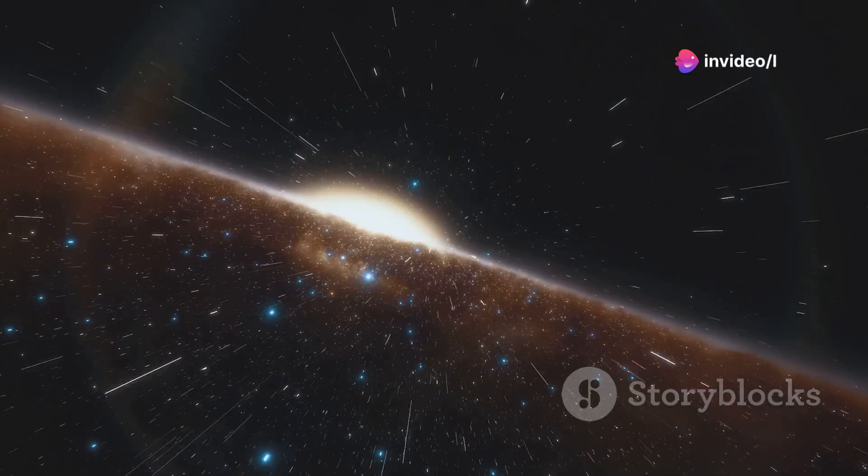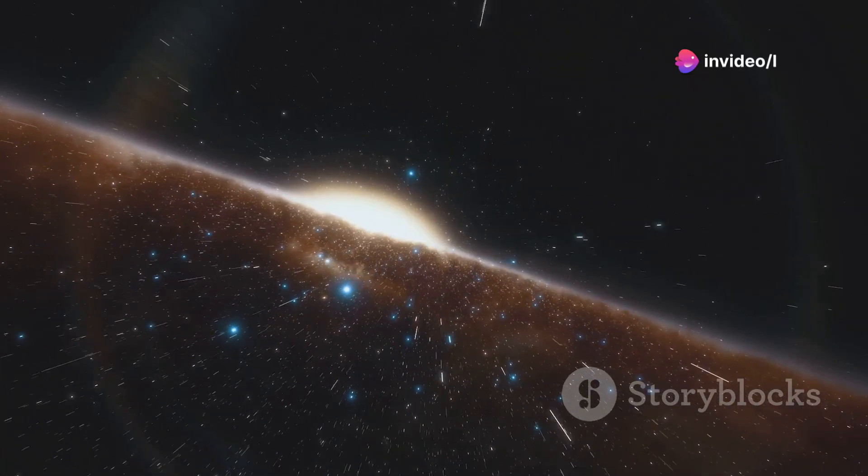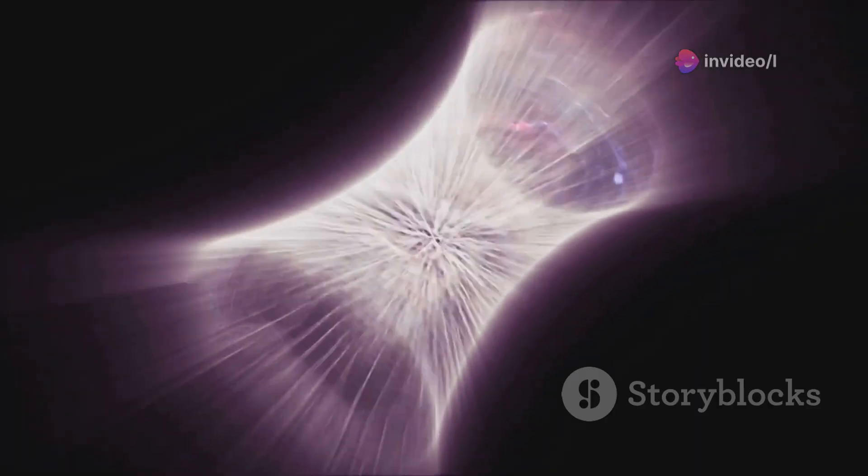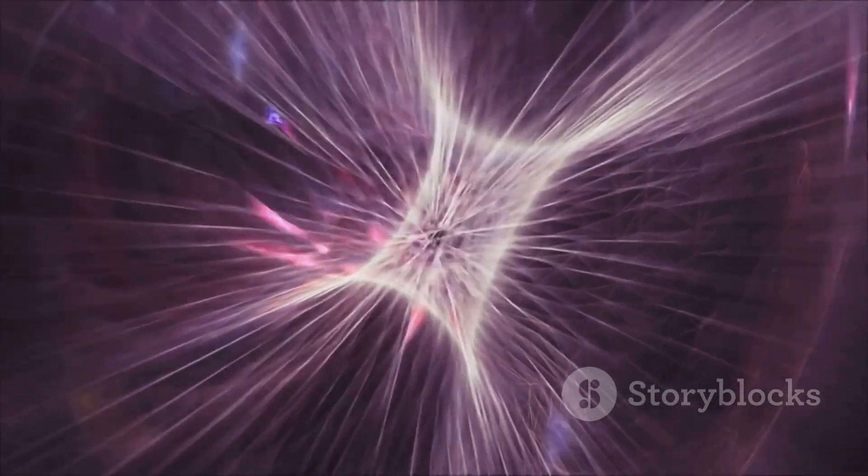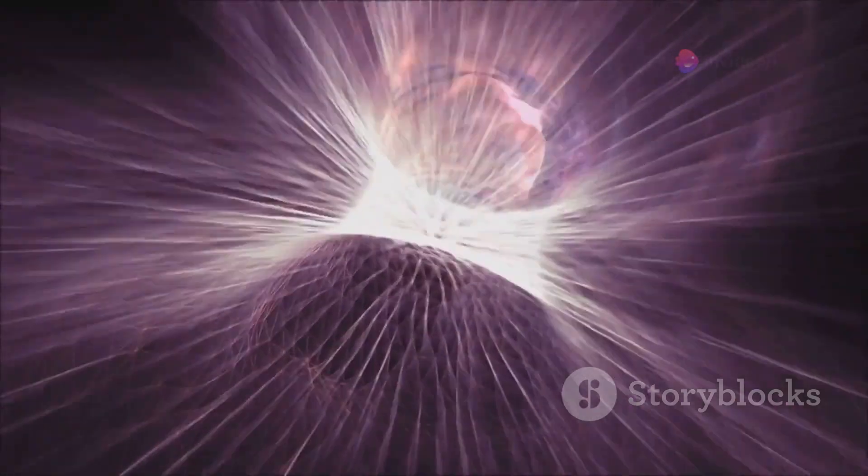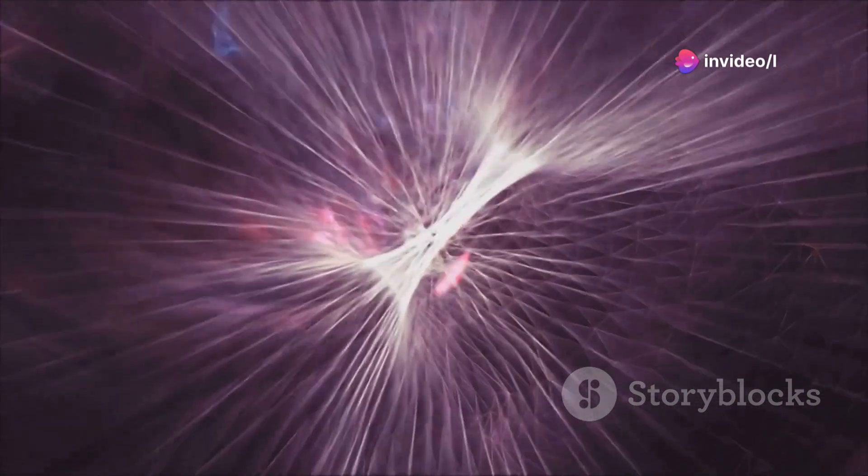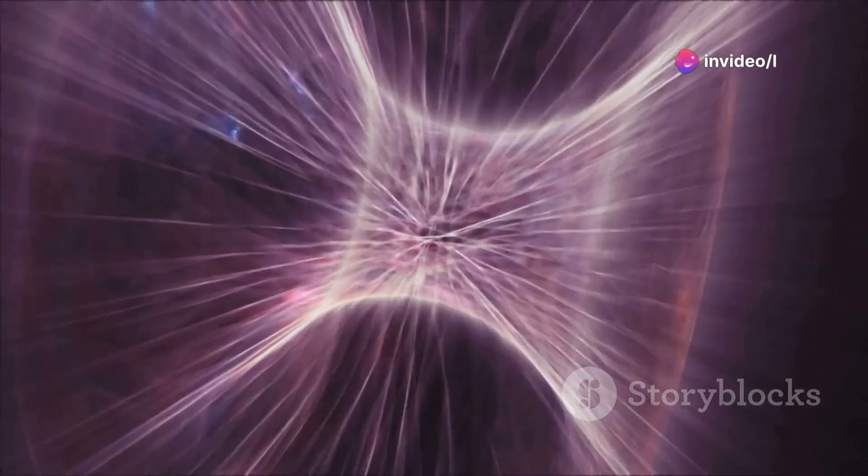Another intriguing aspect of galactic evolution is the role of dark matter halos. These invisible structures envelop galaxies and provide the gravitational scaffolding that holds them together. The interaction between dark matter and visible matter helps shape the formation and growth of galaxies over billions of years.